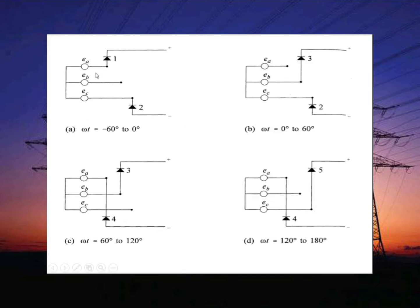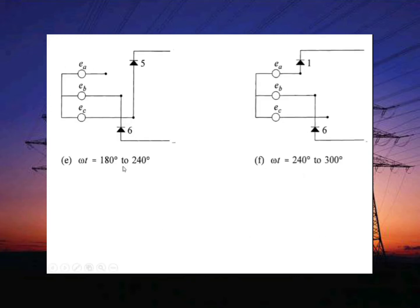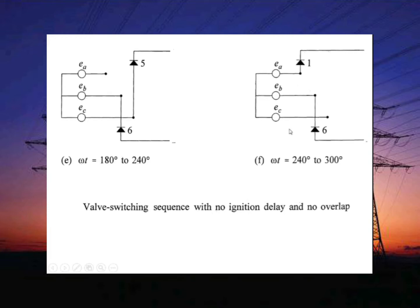These are the different combinations of valve conduction. At omega-t equal to minus 60 to 0 degrees, valves 1 and 2 are conducting. At omega-t equal to 0 to 60 degrees, valves 3 and 2 are conducting. At omega-t equal to 60 to 120 degrees, valves 3 and 4 are conducting. At omega-t equal to 120 to 180 degrees, valves 4 and 5 are conducting. At 180 to 240 degrees, valves 6 and 5 are conducting, and at 240 to 300 degrees, valves 6 and 5 are conducting. This is the valve switching sequence with no ignition delay or overlap.